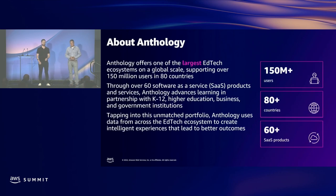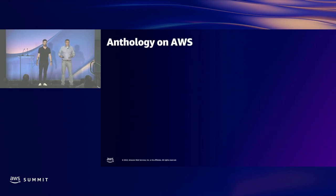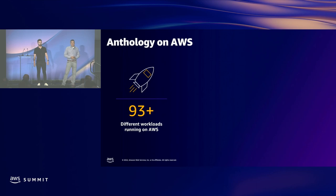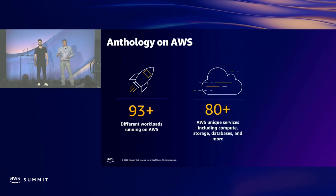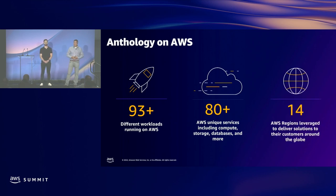Anthology is a leading ed-tech provider with over 150 million users and over 60 SaaS products. Back in October of 2021, Blackboard and Anthology merged to create the largest ed-tech ecosystem at a global scale. To serve their customers, Anthology runs over 93 workloads on AWS using a variety of services across compute, storage, databases, security, analytics, and AI/ML.